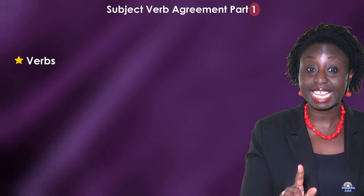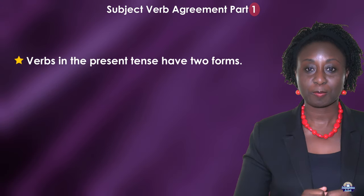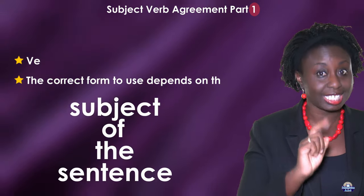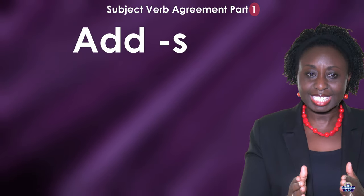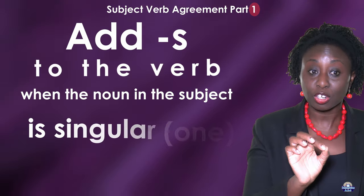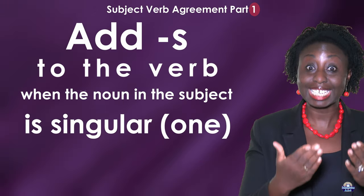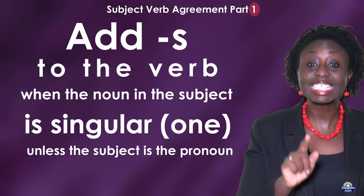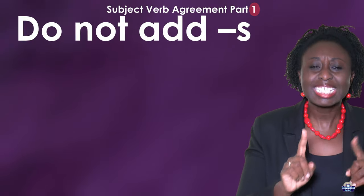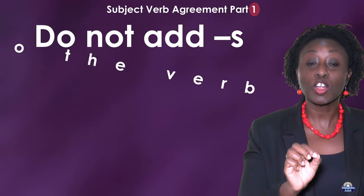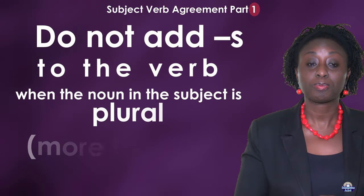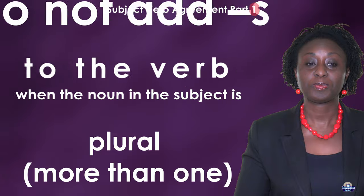Verbs in the present tense have two forms. The correct form to use depends on the subject of the sentence. Add S to the verb when the noun in the subject is singular — unless the subject is the pronoun I or you. Do not add S to the verb when the noun in the subject is plural, more than one. For example,